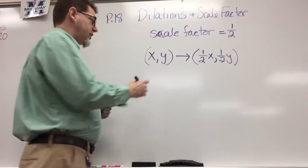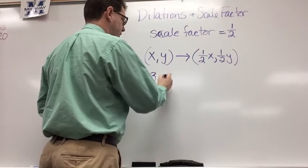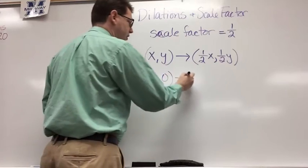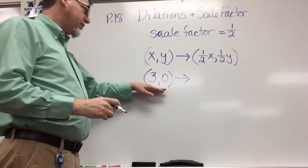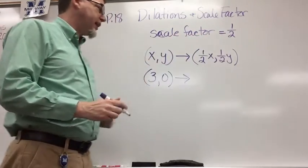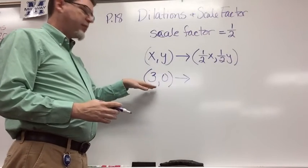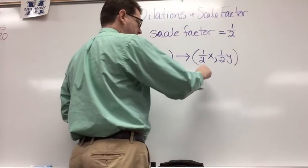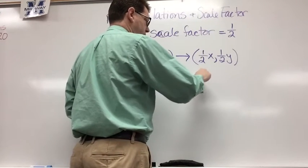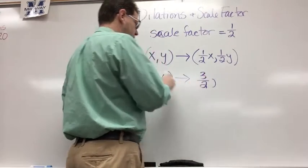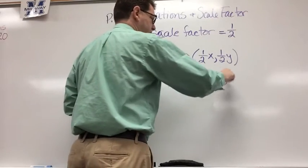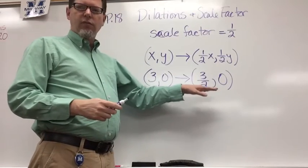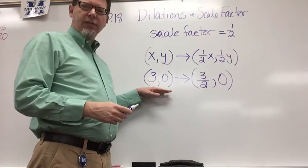Now let's do an example. Let's say I have (3, 0). The new coordinate for (3, 0) at a scale factor of 1/2 is found by multiplying 1/2 times each of these numbers. We know that 1/2 times 3 is 3/2, and 1/2 times 0 is 0. That is our dilated point from (3, 0).